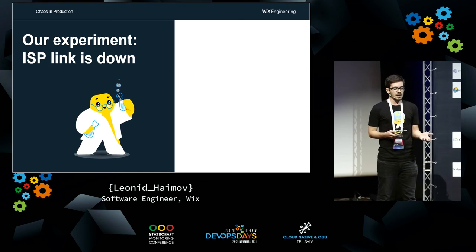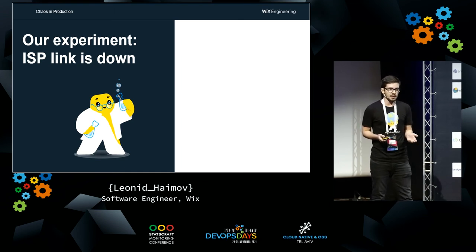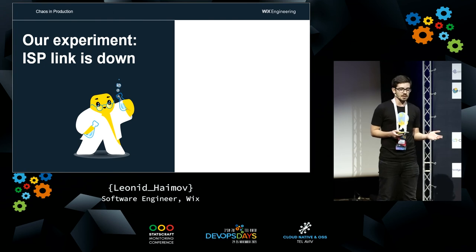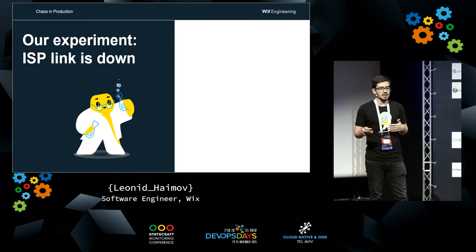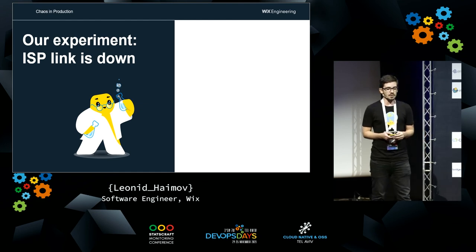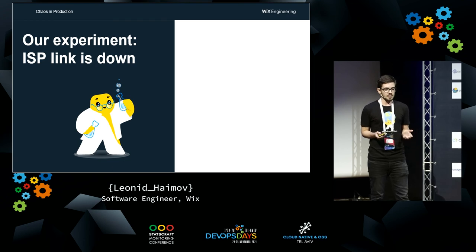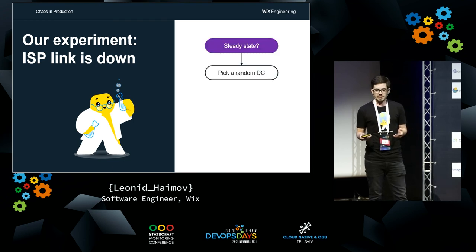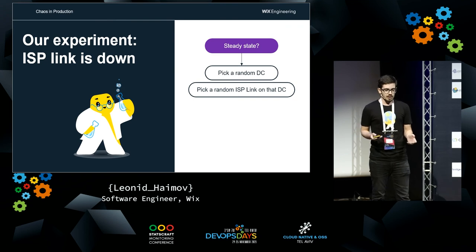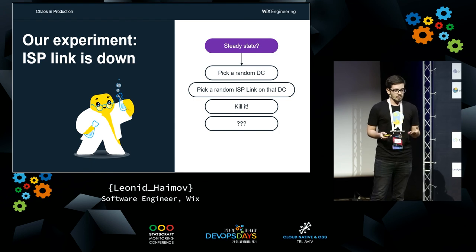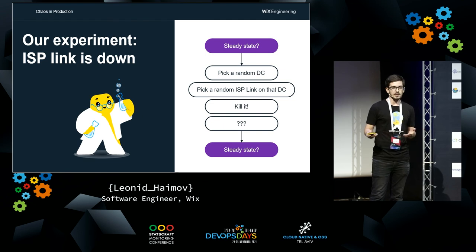We called it 'ISP Link Down.' An ISP is a local internet service provider — the one who gives you the ability to access the internet. In our case these are tier-one ISPs that provide connectivity to our data centers. An ISP link is a physical port that allows connections to go through. We emulate a physical failure by picking a random data center, picking a random ISP link, and disabling it. Then we wait a few minutes.